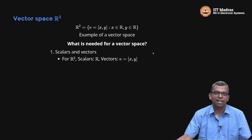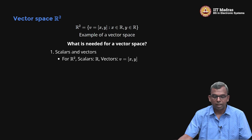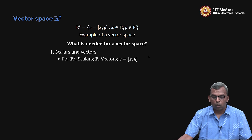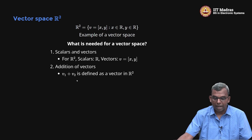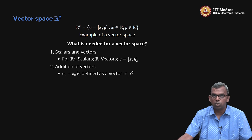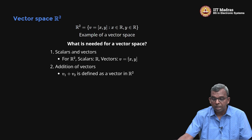First of all, you need scalars and vectors. In R2, the scalars are real and vectors are v, which we write as x comma y in coordinate form. You should be able to add vectors. So v1 plus v2: v1 is (x1, y1), v2 is (x2, y2), and v1 plus v2 is (x1 plus x2, y1 plus y2). When you add two vectors, you should get a vector.